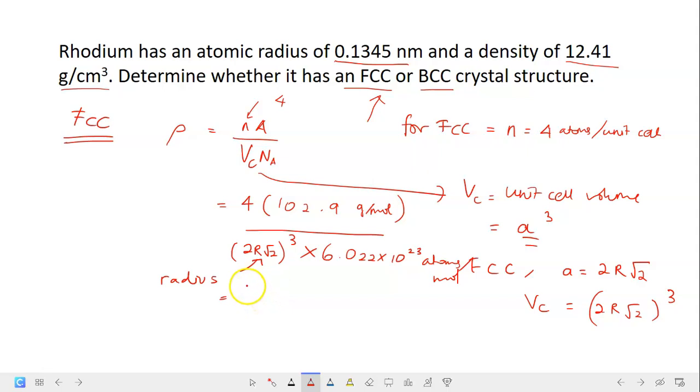And then you will get the answer as 12.41 gram per cm³. Is it the same with the density of rhodium given? Yes, it's the same. So then you know this rhodium is FCC. Because you started your calculation by assuming that the unit cell of rhodium is FCC and you got the same value with the real density. So it's confirmed to be FCC. Thank you.